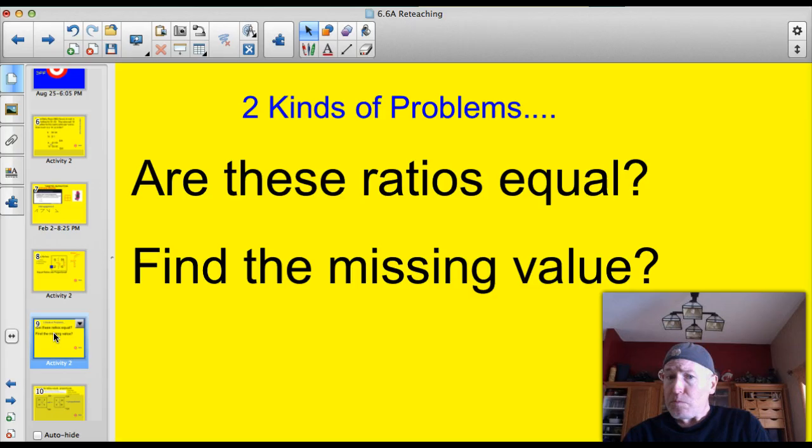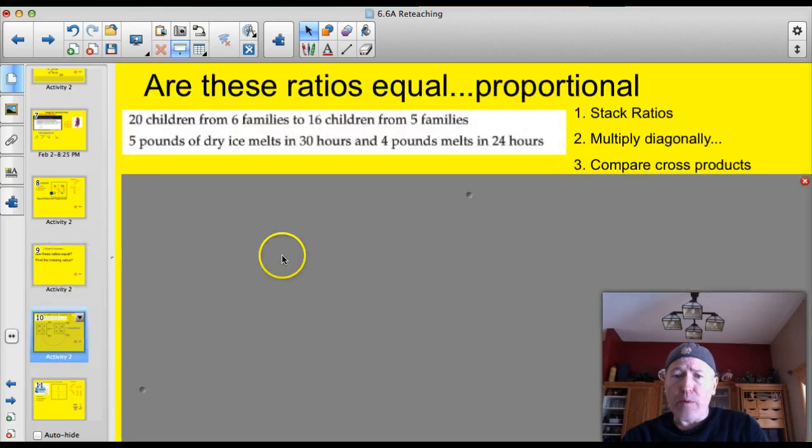So what are we going to be doing with this tonight? Well, there's really two types of problems. Are the ratios equal problems? And then find the missing value problems. And we've kind of even done one of those. So let's start off with, are these ratios equal? Here are a couple of questions.